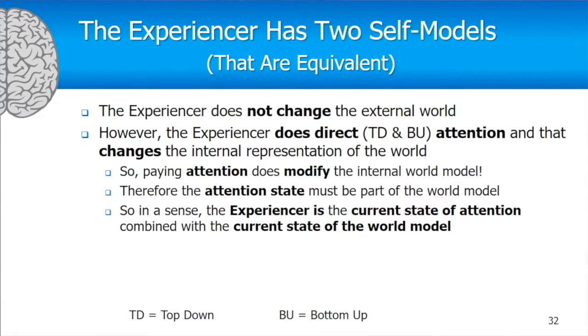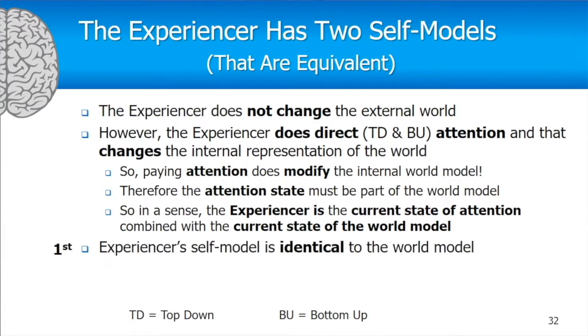The experiencer is the current state of attention combined with the current state of the world model — you couldn't do either one separately. This leads to the first experiencer self-model: the self-model is identical to the world model, because the world model is not just the state of the world but also where you're paying attention, so you can interpret that model correctly.